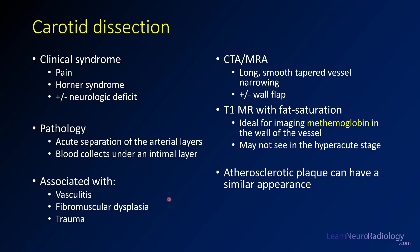Carotid dissection is associated with a number of conditions. The most common things you may see are trauma or fibromuscular dysplasia. Vasculitis, other vasculopathies, and connective tissue disorders also make patients more prone to getting carotid dissection.